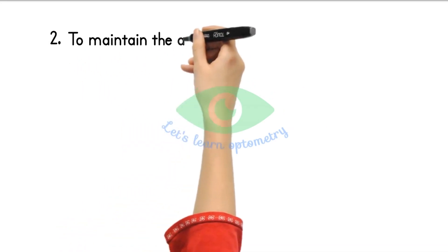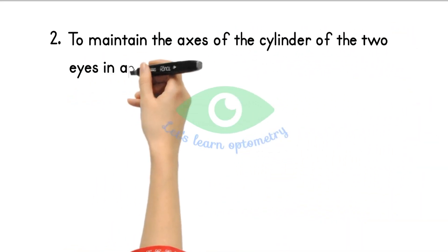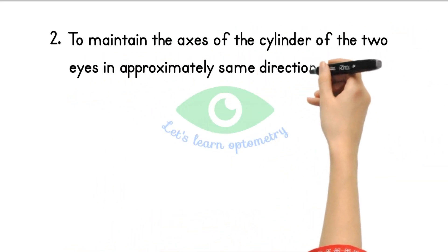A few patients may have different prescription between two eyes like 90 axis in one eye and 180 axis in the other eye. So in that case we can transpose to any one eye and we can able to maintain the axis of two eyes in approximately the same direction.